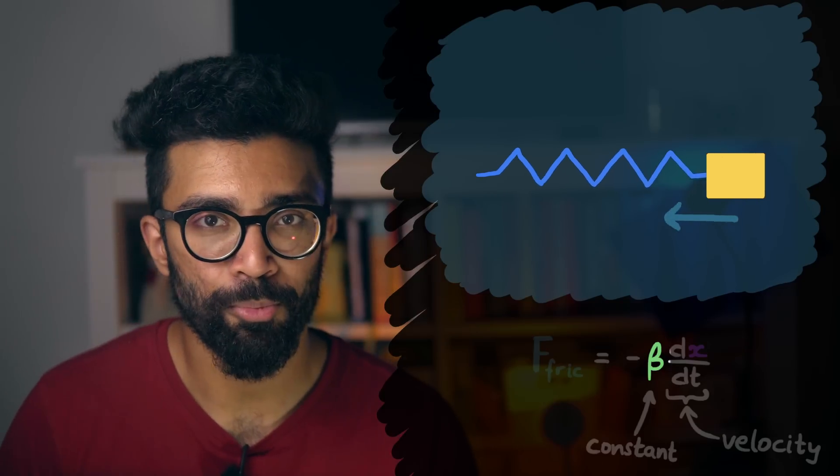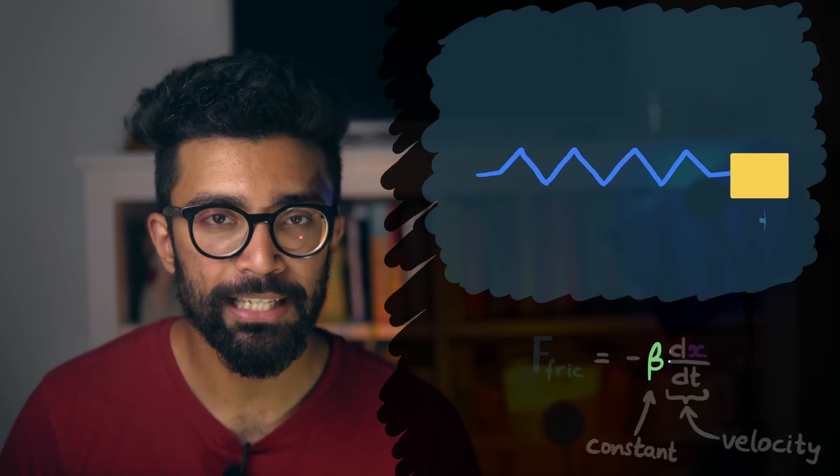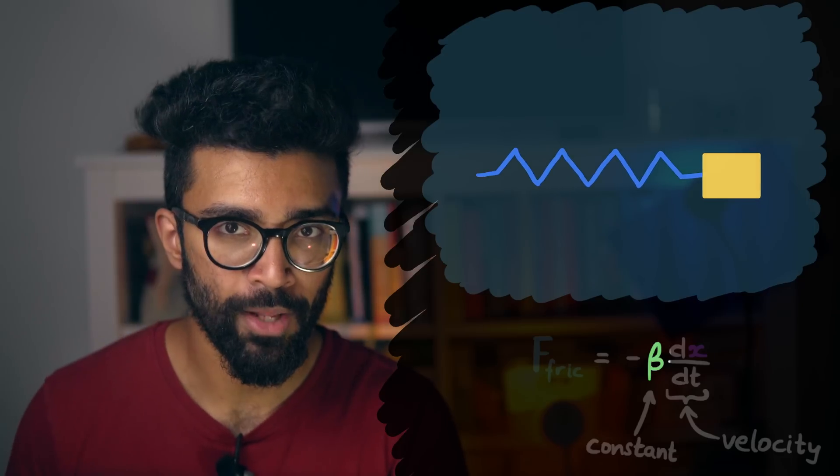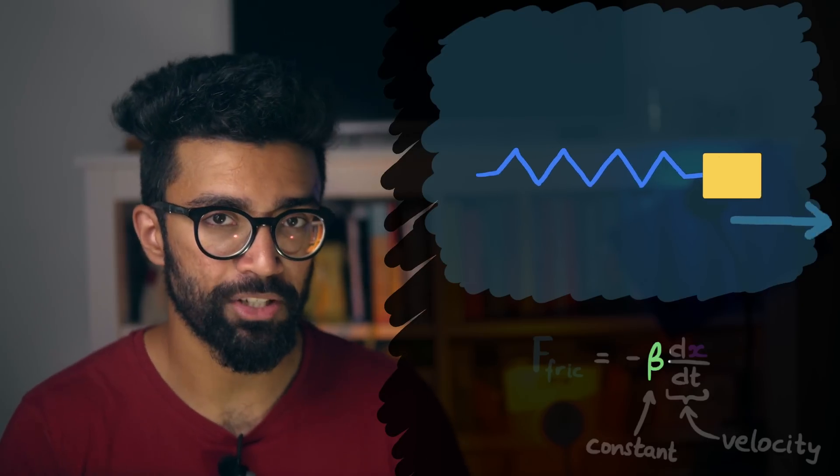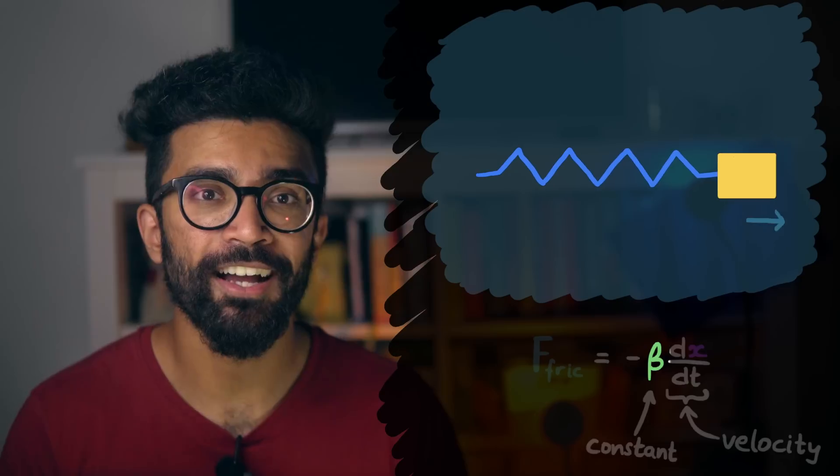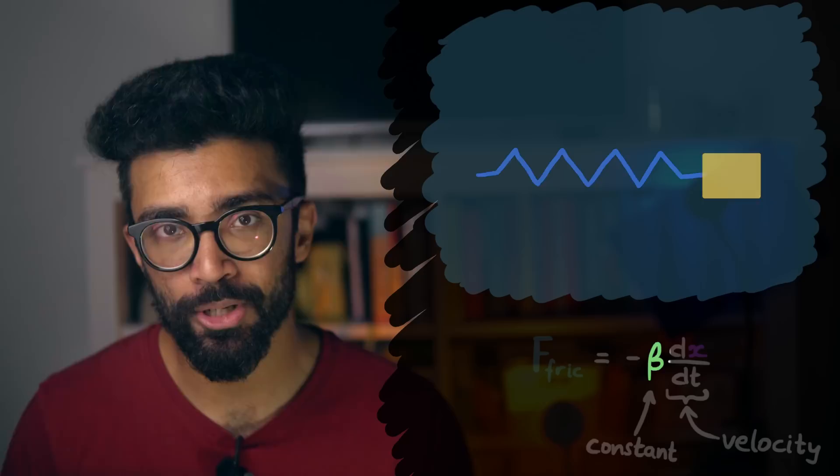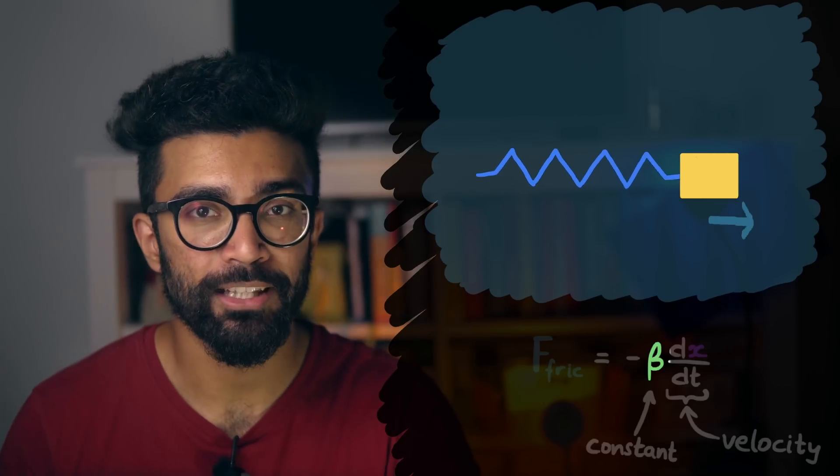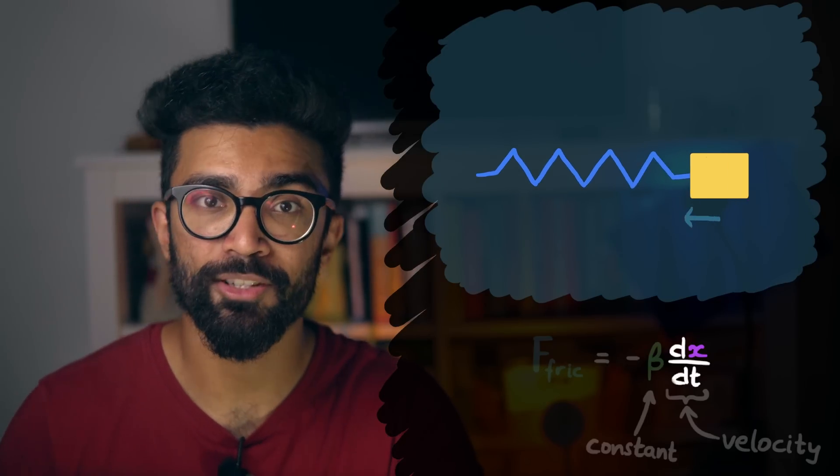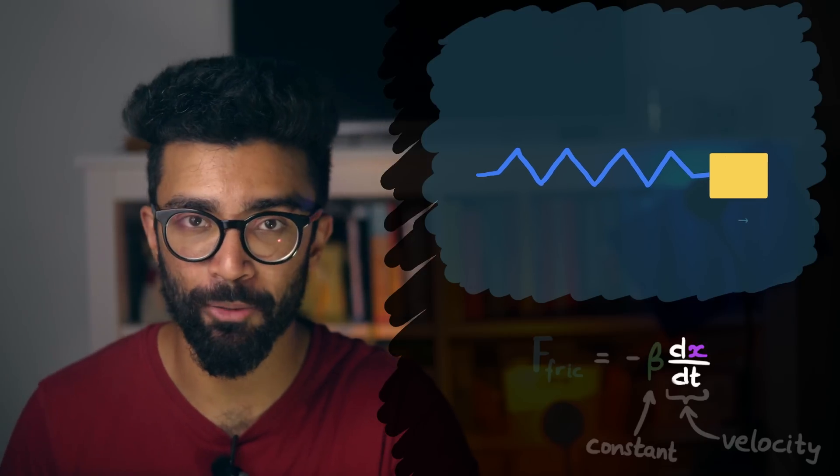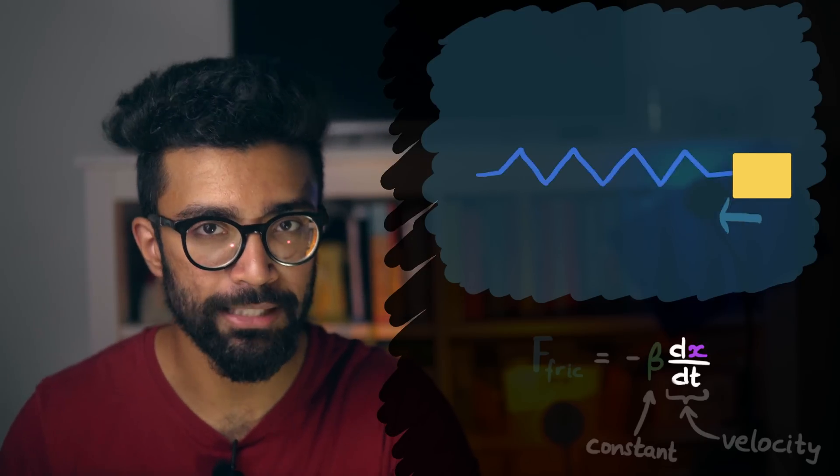This constant of proportionality here is basically a measure of the frictional strength of the liquid itself. A higher friction liquid, such as thick, goopy syrup, will have a higher constant of proportionality than a less sticky fluid like water. And let's remember that the block's velocity is just the rate of change of its displacement or position, depending on how we're looking at it, dx by dt.